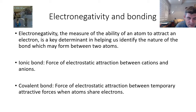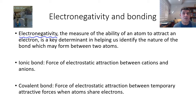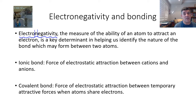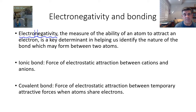The first thing we want to do is look at the property of electronegativity. To review: electronegativity is simply the ability of an atom to attract an electron — to become electrically negative. The electron is what creates the negativity, so an atom becomes negatively charged by gaining an electron. This ability to pull in an electron is one of the important determinants in helping us identify the nature of different bonds that may form between two atoms.